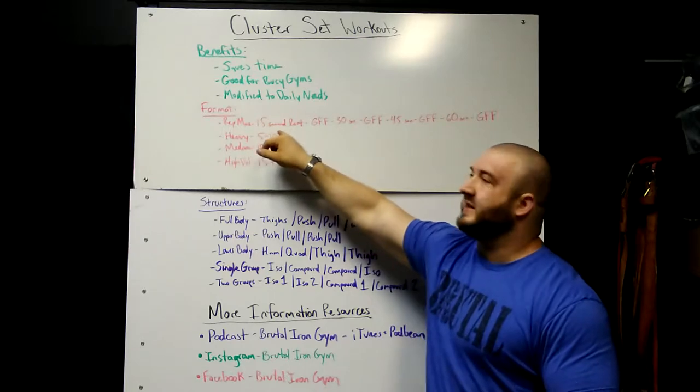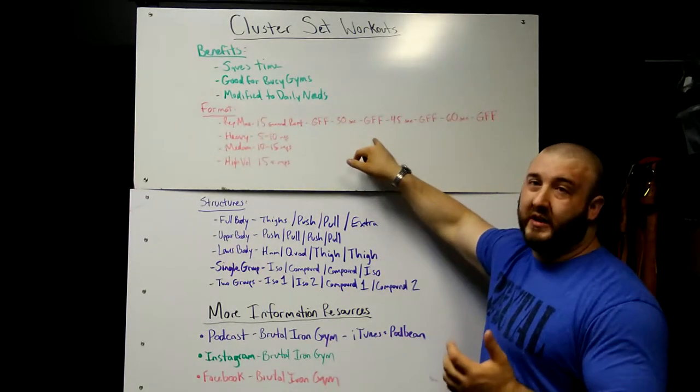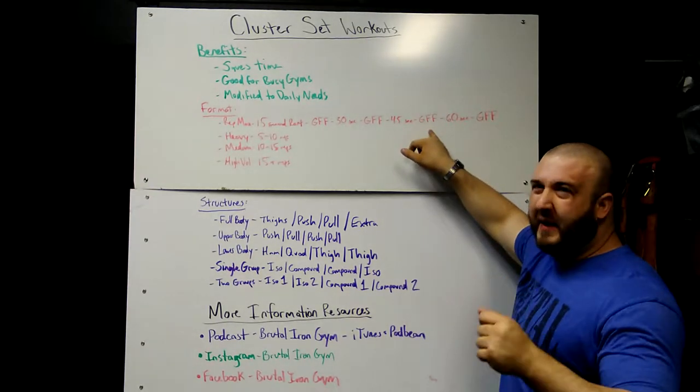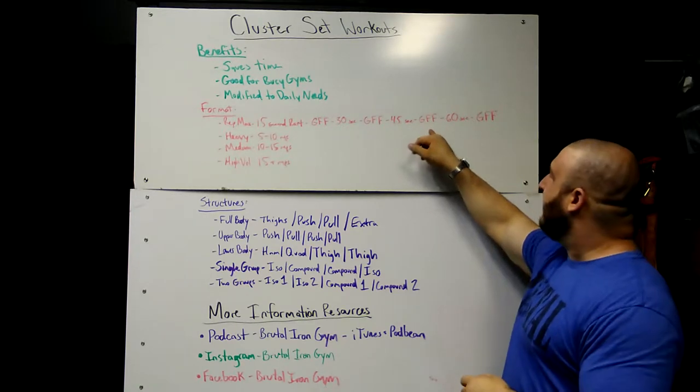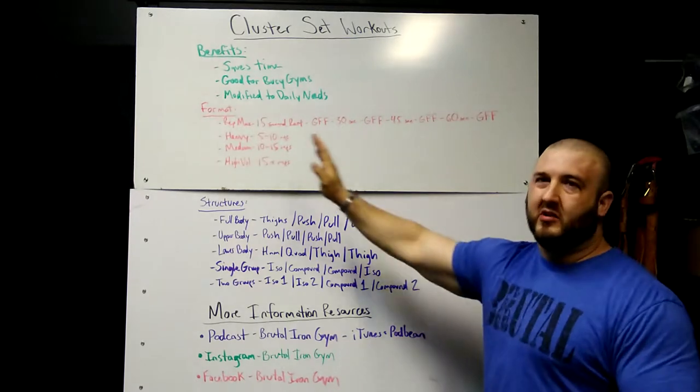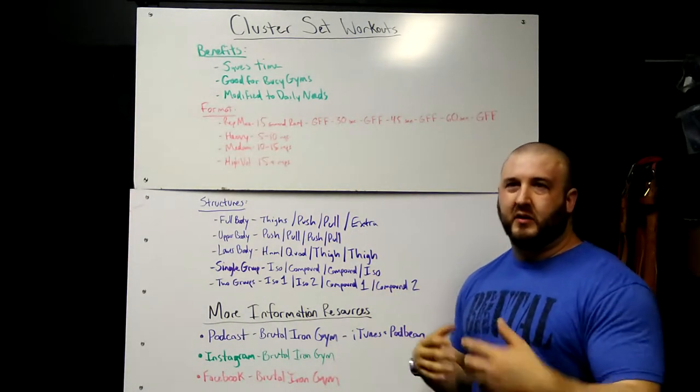So I'll do 5 reps, rest 15 seconds, I might only get one rep. Rest 30 seconds, maybe still only one rep because I'm still fatigued. Rest 45 seconds, maybe I can get two reps, one good one, maybe a second that's starting to break down. Rest a minute, then maybe two or three reps. This gets you a lot of low rep practice.